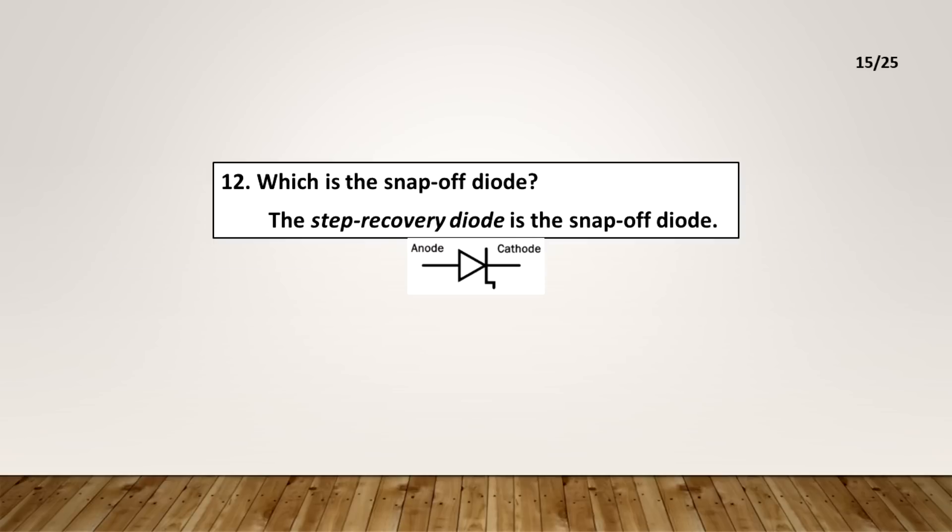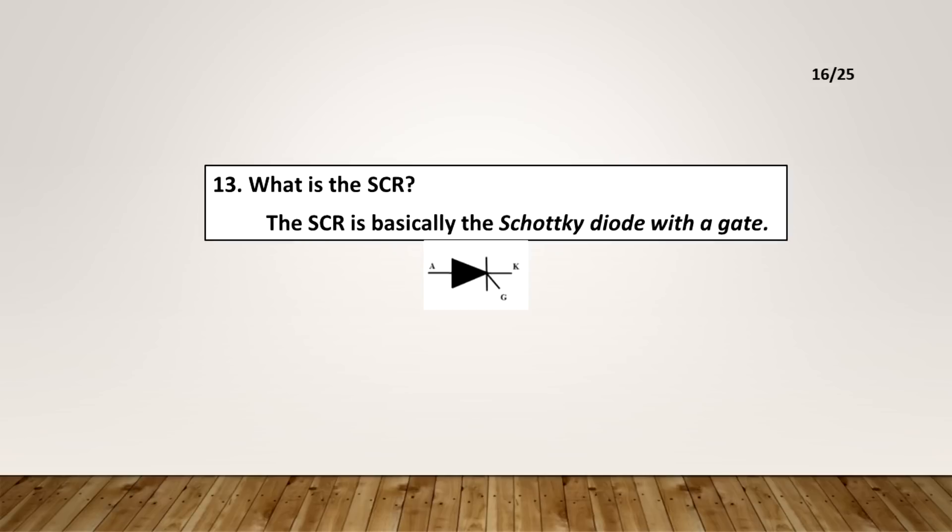What is the snap of diode? The step recovery diode is the snap of diode. What is the SCR? The SCR is basically the Schottky diode with a gate.